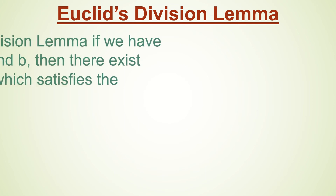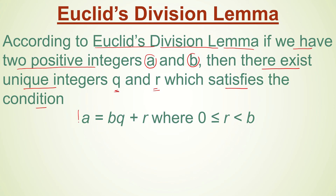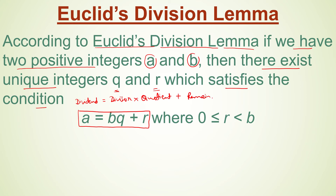Let us first see Euclid's division lemma. A lemma is like a theorem. According to Euclid's division lemma — which is basically the basic division theorem — if we have two positive integers A and B, then there exist unique integers Q and R which satisfy the condition A equals BQ plus R. This can be compared with the division algorithm: dividend equals divisor into quotient plus remainder.